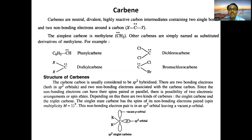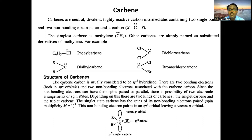If the two non-bonding electrons have opposite spin — one with +1/2 and the other −1/2 — then total spin s = 0. Spin multiplicity = 2(0) + 1 = 1. A carbene where the non-bonding electrons have opposite spin is called singlet carbene.